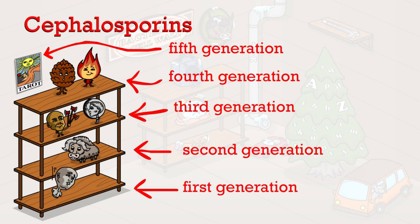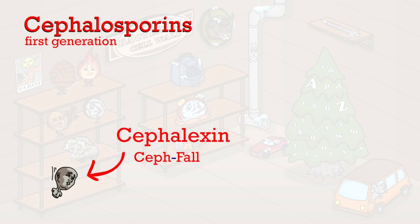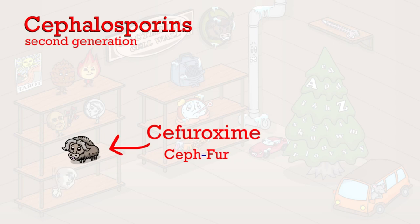The first shelf contains the first generation cephalosporin, cephalexin, represented by the falling head. The second shelf contains the second generation medication, cefuroxime, represented by the furry character.